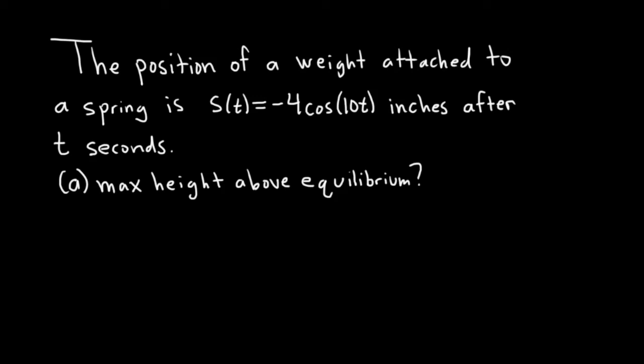Hi, in this example we're going to do a problem involving simple harmonic motion. We're told that the position of a weight attached to a spring is given by this function, s of t equals negative 4 times the cosine of 10t inches after t seconds.